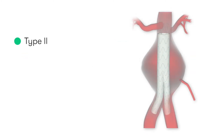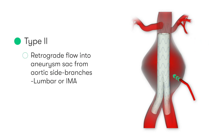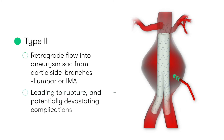Type 2 endoleaks are when we can get retrograde flow into the aneurysm sac lying adjacent to the graft, as a result of blood flowing via side branches such as the lumbar vessels or the inferior mesenteric artery. This retrograde flow can lead to accumulation of blood into the now redundant aneurysm sac, and this bleeding can lead to rupture and potentially devastating complications to our patient.